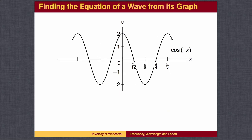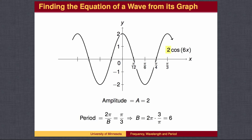Amplitude and period are measured in the same way for cosine waves. The graph is at its high point when x equals 0 — this is how we tell the cosine wave from the sine wave. The sine wave passes through the origin, while the cosine wave is at its peak at x equals 0. The wave goes up to 2 and down to negative 2, so the amplitude is 2. The graph completes a full wave at pi over 3, so pi over 3 equals 2 pi over b, making b equal 6. The equation of the graph is y equals 2 times the cosine of 6x.